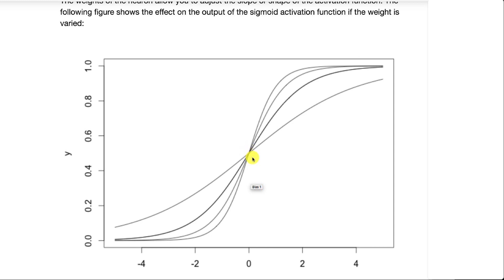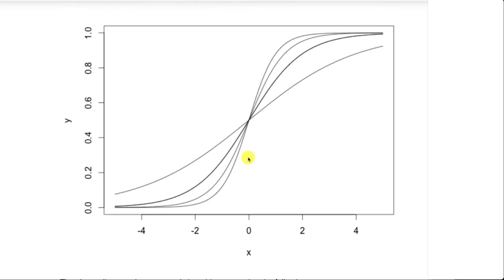The line always has to pass through zero when the input is zero, so all of these pass through zero. There's no way to really shift that.